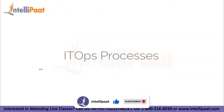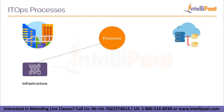IT Ops processes. First is Infrastructure. The process of setting up, provisioning, maintaining, and updating the software and hardware parts of an organization's IT infrastructure is referred to as infrastructure management. Operating systems, professional tools, physical servers, laptops, printers, and other items are among these components. IT Ops also guarantees that storage requirements for on-premises and cloud processes are met.